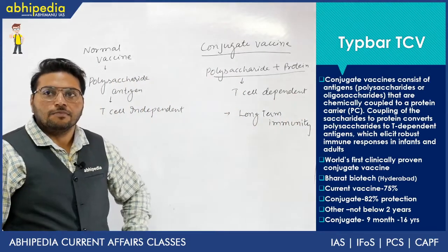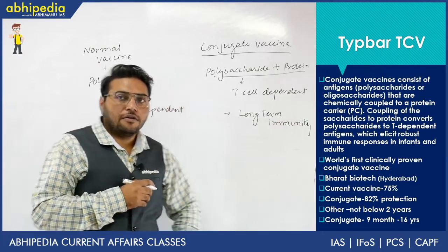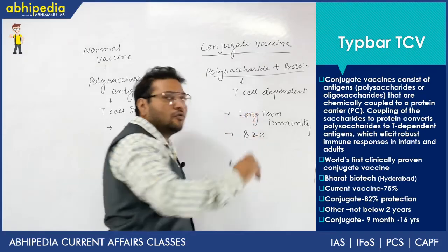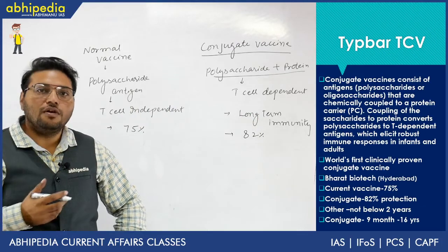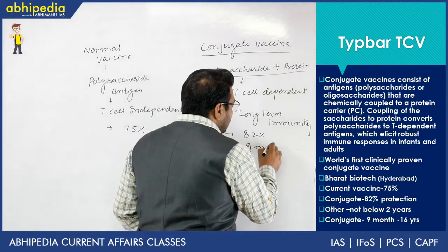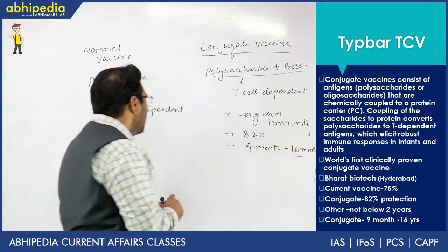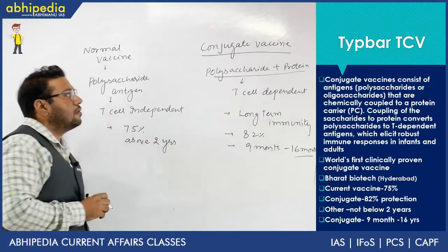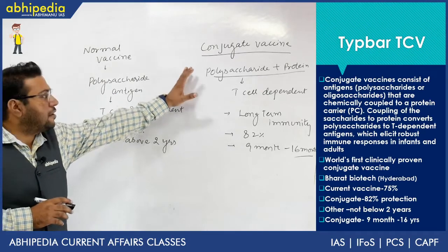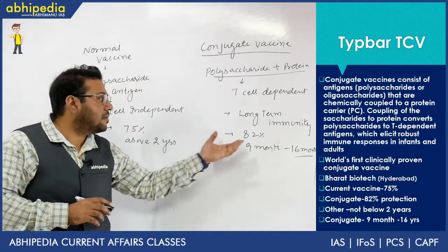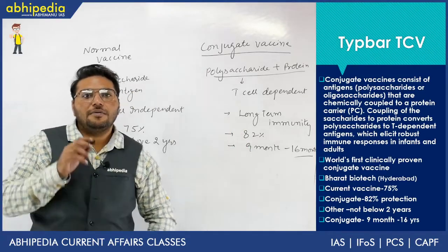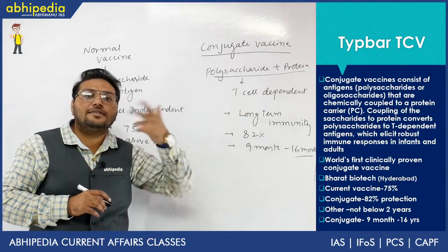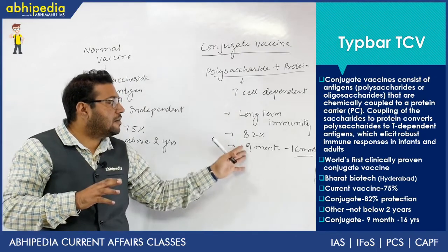When the conjugate vaccine works with T cells, this leads to long-term immunity in the body. That is the benefit. Second, protection from the normal vaccine is around 75%, whereas in the case of the conjugate vaccine it is around 82%. Also, the conjugate vaccine can be given to children from 9 months to 16 months of age, whereas the normal vaccine is given at about 2 years. UPSC might ask whether it is T cell dependent or independent — though rare, understanding the concept is essential.